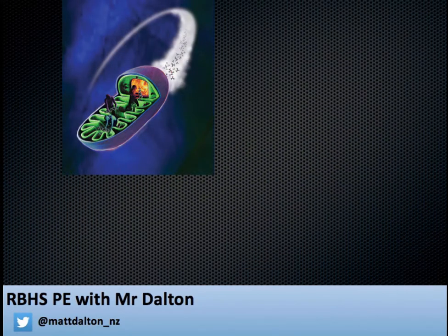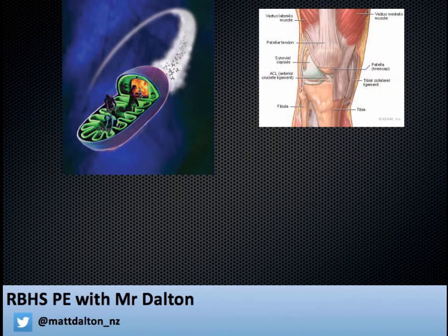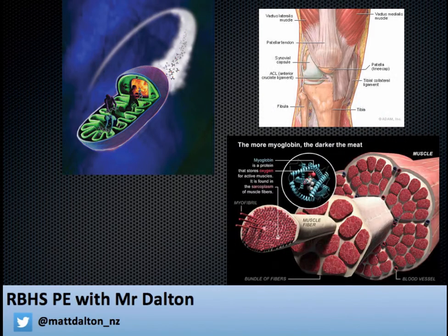There will be an increase in mitochondrial density — the cell's powerhouse — which means there is an increase in the rate of ATP production. The muscles, bones and ligaments will also become stronger to cope with the additional stresses and impact put through them. The amount of myoglobin within skeletal muscle increases, which allows more oxygen to be stored within the muscle and transported to the mitochondria.